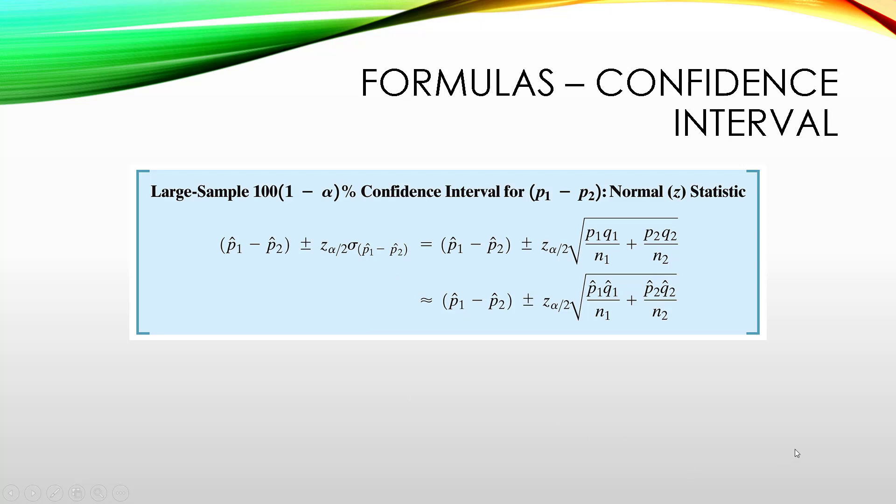And the margin of error formula looks very similar to the margin of error formula when we were just dealing with confidence intervals for single proportions from a single population. But instead of just pq over n inside the square root, we also have to add the second population's standard error in there.